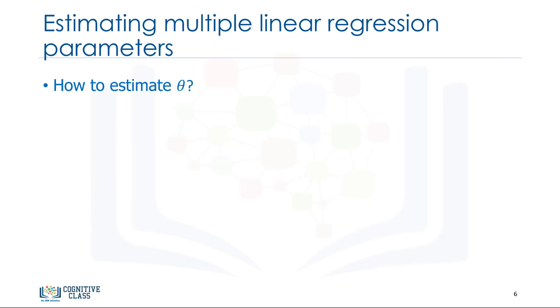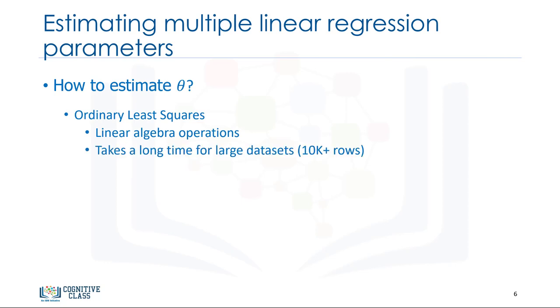How do we find the parameter or coefficients for multiple linear regression? There are many ways to estimate the value of these coefficients. However, the most common methods are the ordinary least squares and optimization approach. Ordinary least squares tries to estimate the values of the coefficients by minimizing the mean square error. This approach uses the data as a matrix and uses linear algebra operations to estimate the optimal values for the theta. The problem with this technique is the time complexity of calculating matrix operations, as it can take a very long time to finish. When the number of rows in your data set is less than 10,000, you can think of this technique as an option. However, for greater values, you should try other faster approaches.